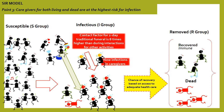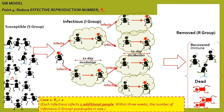This leads us to point three, which deals with the effective reproduction number R. This number translates to the number of people each infected person infects. As this figure shows, if a community has an R of 2, within three weeks the size of the infectious population can increase by a factor of 4, given an incubation period of about 11 days, which is what we have for the current Ebola epidemic.